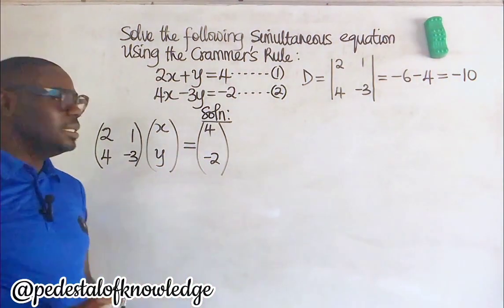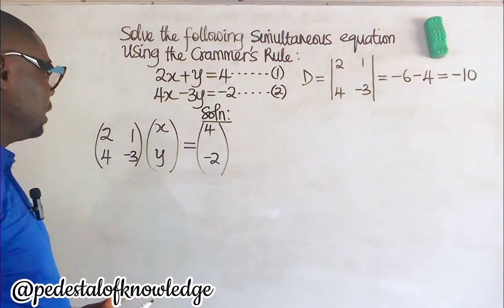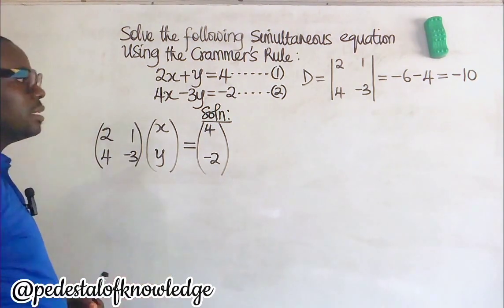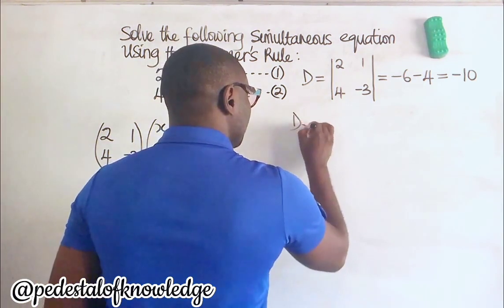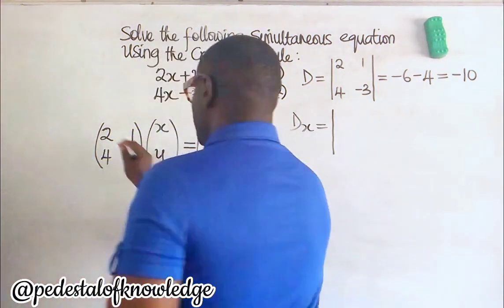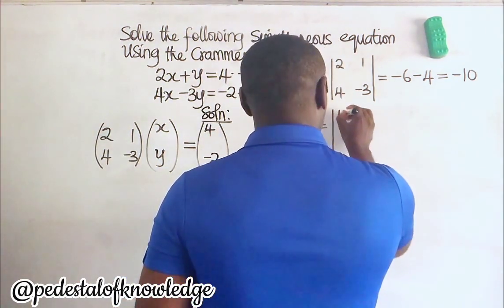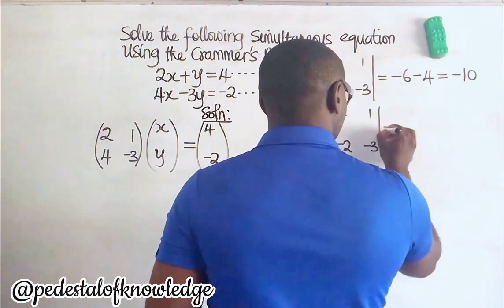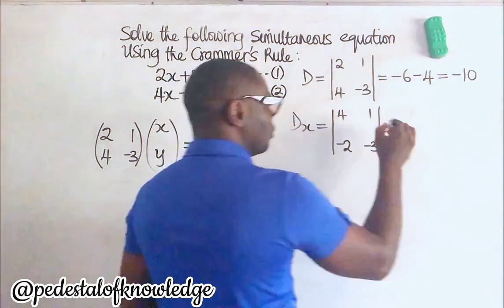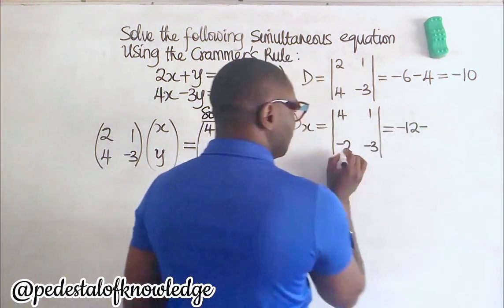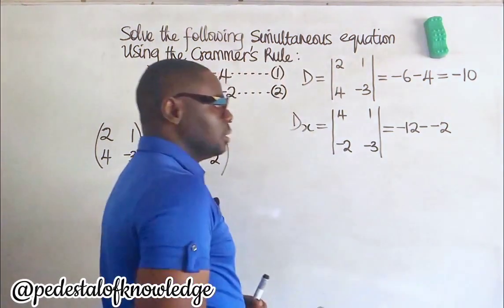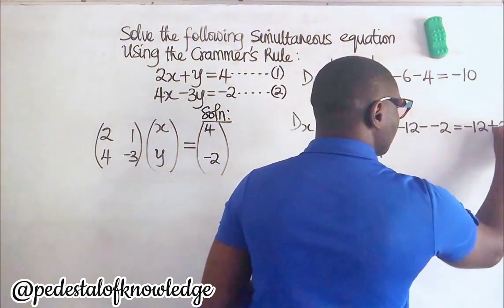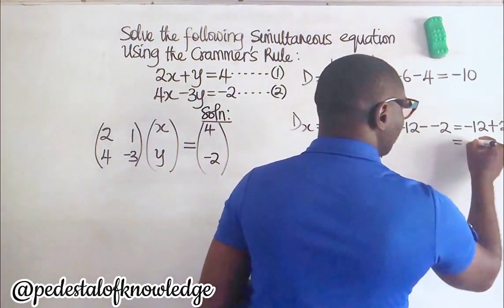The next step is to find the determinant of the matrix of X. The matrix of X is obtained by replacing the first column of this matrix with the matrix of the constants, and then finding the determinant. So we replace 2 and 4 with 4 and minus 2. This gives us minus 3 times 4, which is minus 12, then minus 2 times 1, which is minus 2. Remember that minus times minus gives us plus 2. So minus 12 plus 2 gives us minus 10.